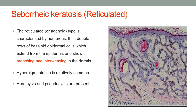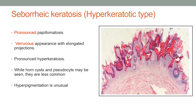The reticulated type is named for its reticulated pattern, formed by branching and interweaving extensions from the epidermis of basaloid epidermal cells along with horn cells. The third type is the hyperkeratotic type, which shows pronounced hyperkeratosis, elongated projections, pronounced papillomatosis and horn cysts. Hyperpigmentation is unusual in such cases.